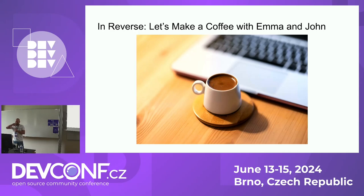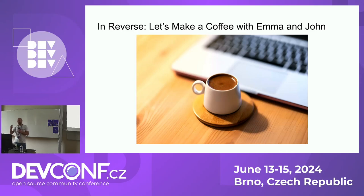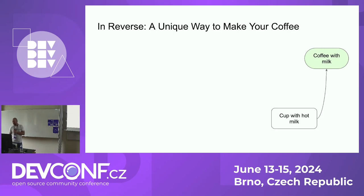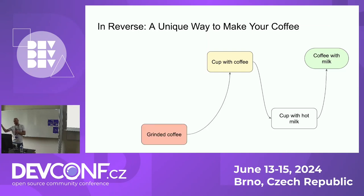Let's take a look and make a coffee. We have imaginary people - Emma and John - and we will make coffee not in the straight way but in the backward way. In the straight way you just pick a cup, add some coffee, add some milk, and it's ready. Let's do it in the opposite direction. We have our coffee ready - a cup of coffee with milk. Before that, we have a cup with just hot milk. Before that, we have a cup with coffee. We have ground coffee that we can put in the cup. And before that, we have a cup - that's the starting position.